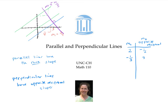One more example: if I started off with a slope of seven halves, then the reciprocal of that would be two sevenths, and I change it to an opposite reciprocal by changing the positive to a negative.